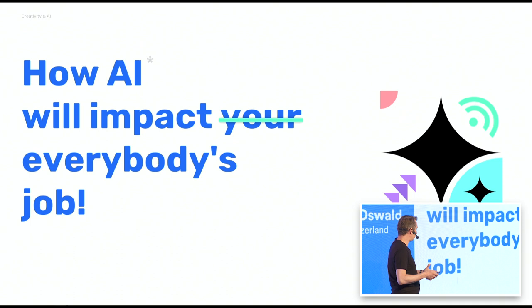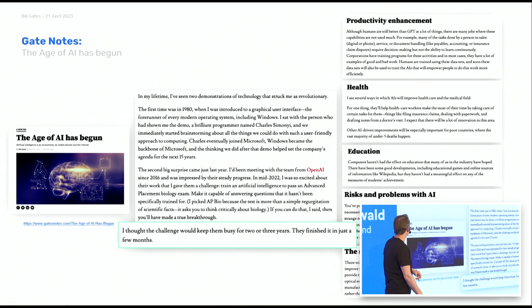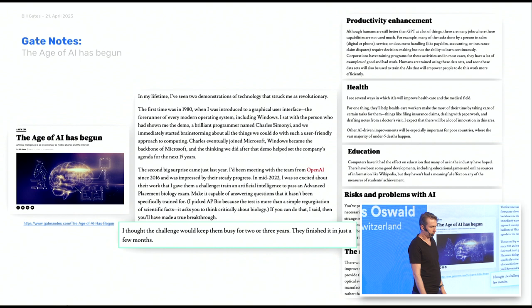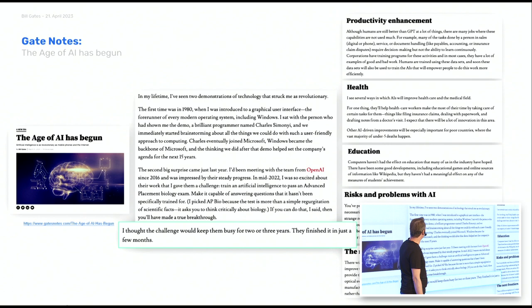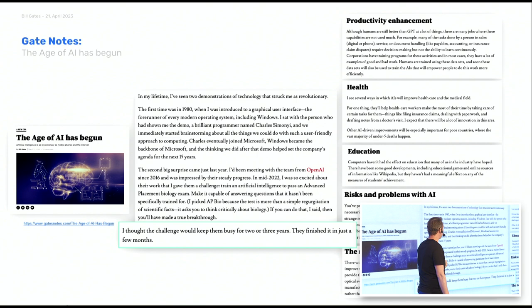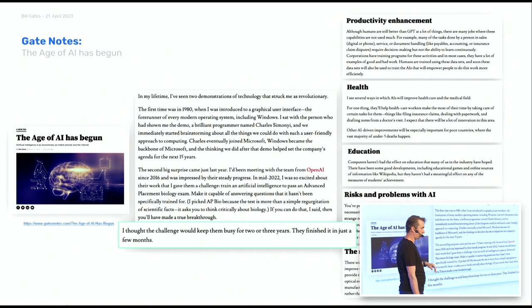And this is the problem: how will this impact you as developers, mine as a creative, and everybody's job? Because this can be applied to so many things. Bill Gates himself was surprised at the speed these things came up with. He predicted in his Gates note that we will have a productivity enhancement by AI, heavy changes to industries like health and education, risks and problems we have to deal with, and then totally new frontiers we cannot imagine yet.